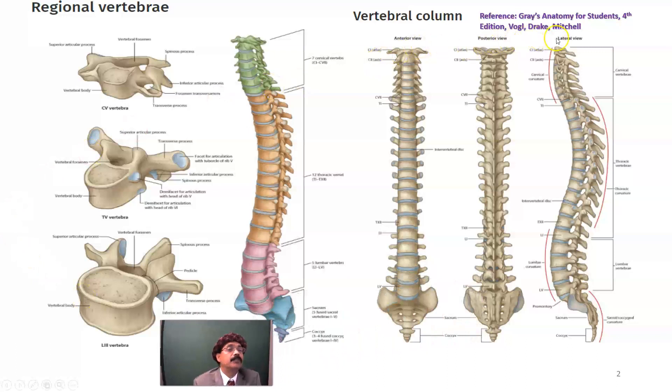We also have curvatures of the spine: the cervical curvature, thoracic curvature, lumbar curvature, and sacral curvature.